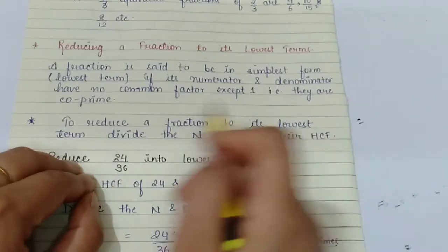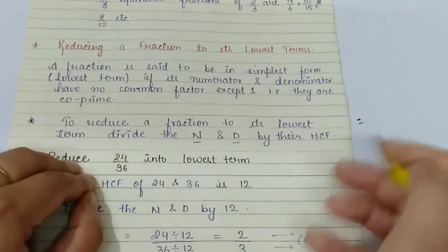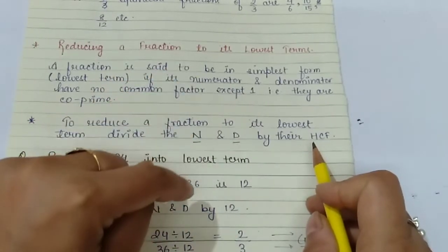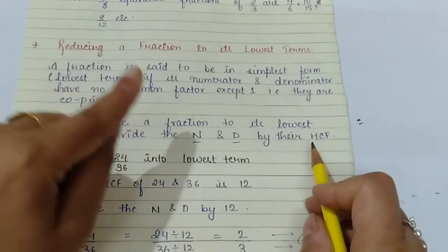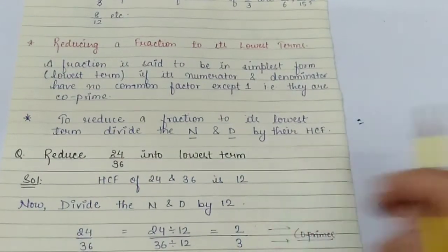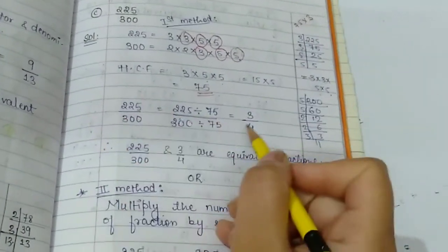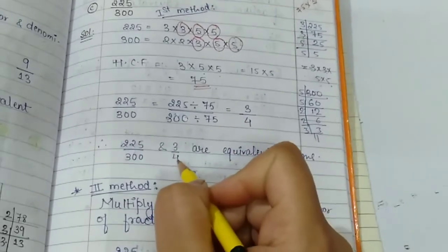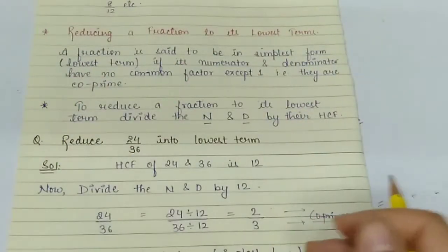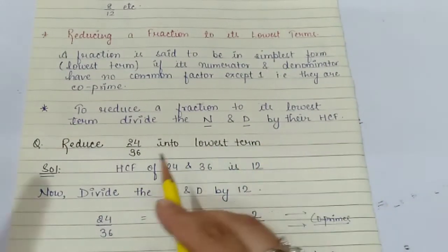To reduce a fraction to its lowest terms, divide the numerator and denominator by their HCF (SCF). We have seen the HCF method when finding equivalent fractions, and we are going to use that same method here. When finding equivalent fractions by that method, we got the smallest fraction. Here, 3 upon 4 is the smallest equivalent fraction. The HCF method is used to find the lowest terms or simplest form of any fraction.